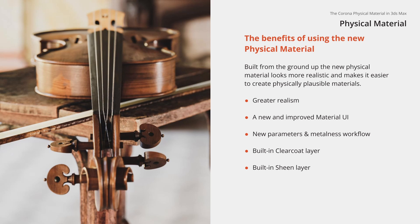The new physical material also conforms to industry standards better — even though industry standards are a loosely defined term. We now support the roughness parameter for controlling the blurriness of your reflections, and we also support switching between the IOR and specular workflows. Last but not least, with the new physical material we've further improved the way glass is rendered. This is just a list of some of the key benefits, and we'll go more into the details as we progress, demoing all these features as we create the most typical materials you'll encounter in your own projects.